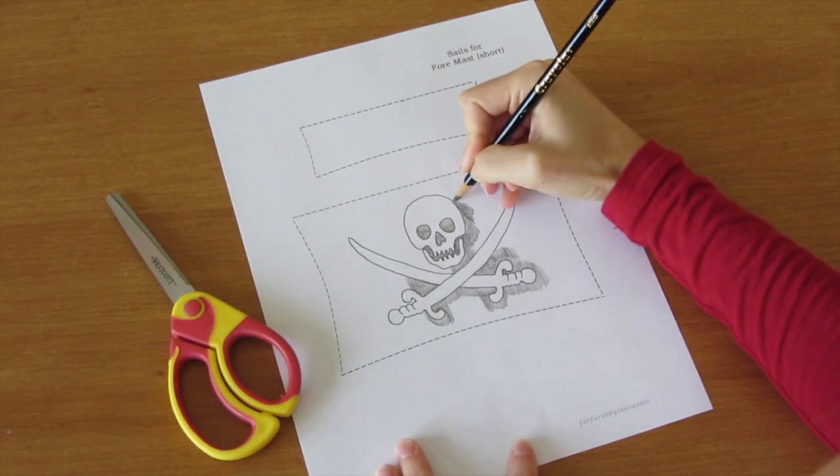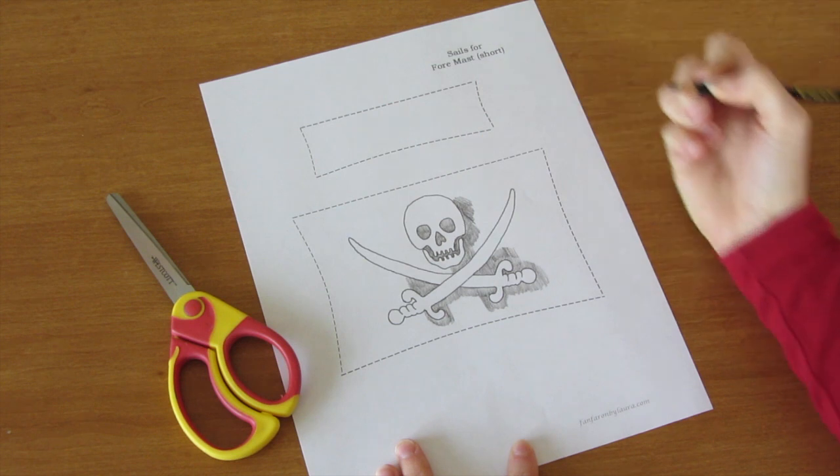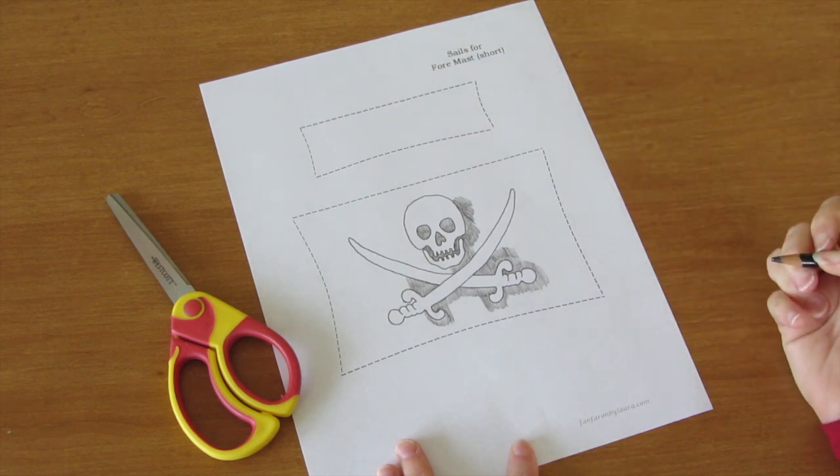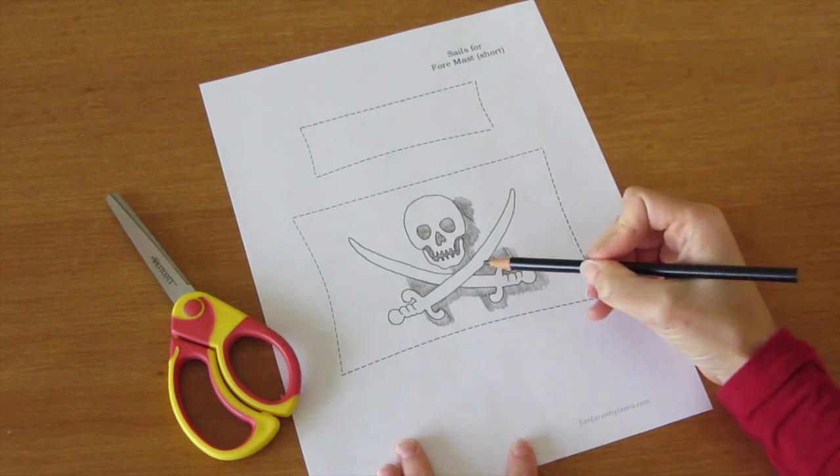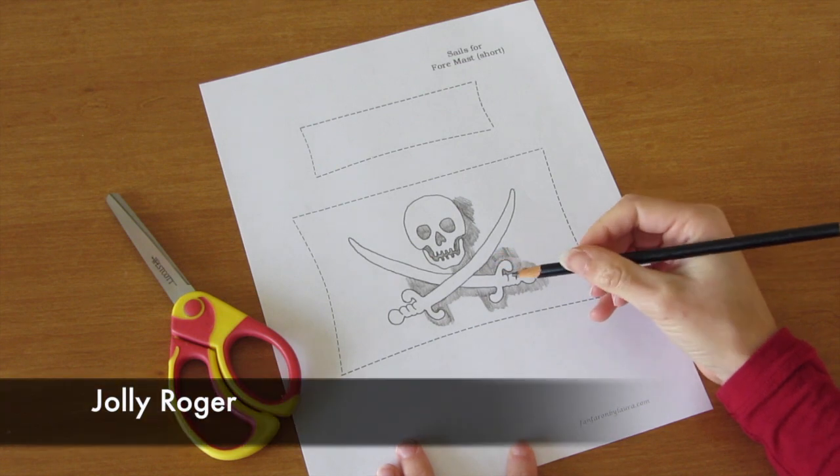Start by coloring the sails if you want to. I'm coloring mine black, but you could also leave them white. A pirate symbol with a skull like this is generally referred to as a Jolly Roger.